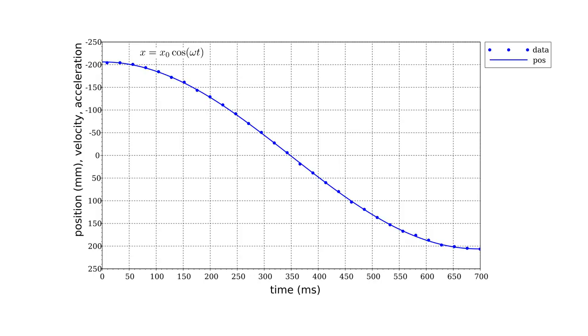Now, we fit a function, x equals x_0 cos(ωt), to these data by adjusting the values of the oscillation amplitude x_0 and the frequency ω until the difference between the data and the curve is minimized. The resulting fit is very good, and we use this curve to represent the mass's position as a function of time.